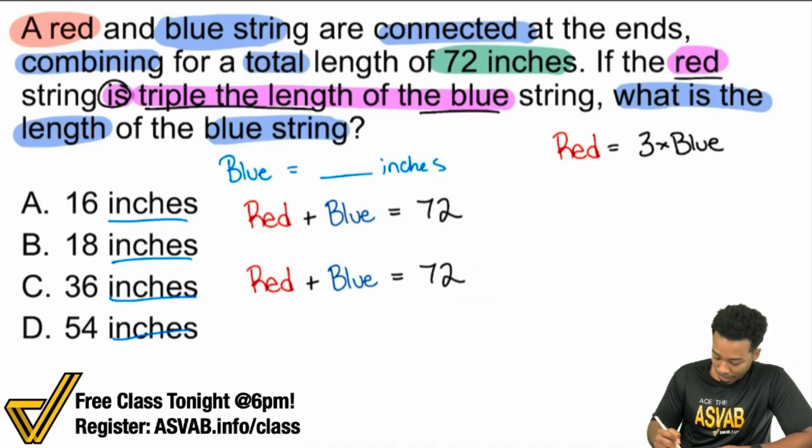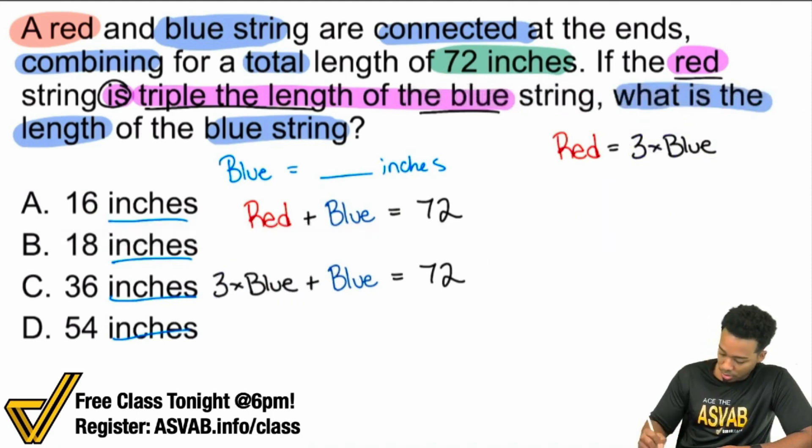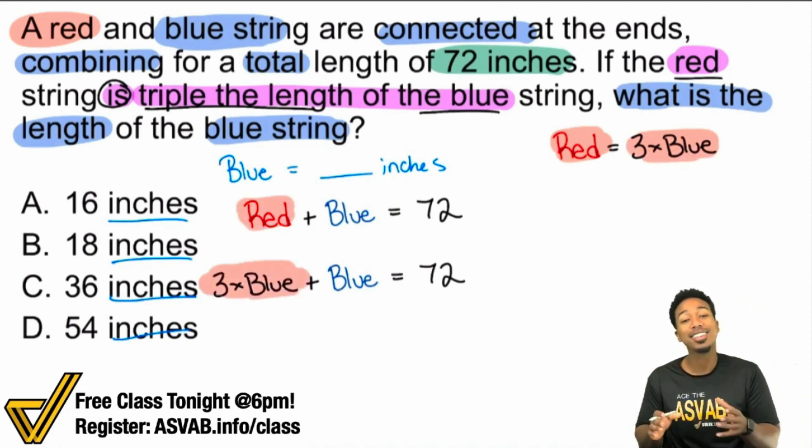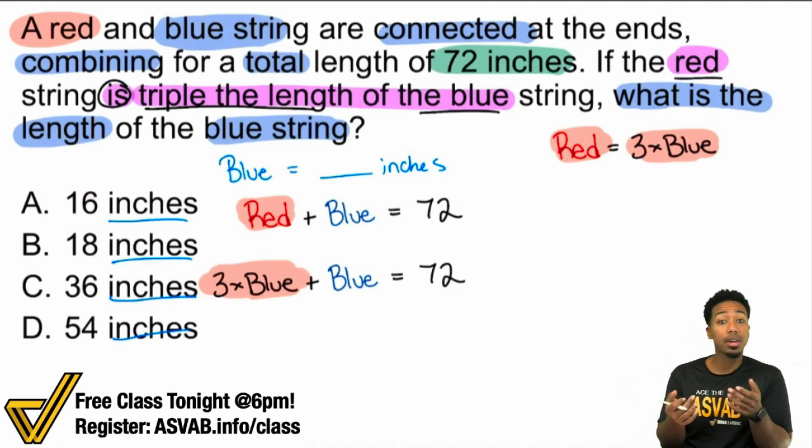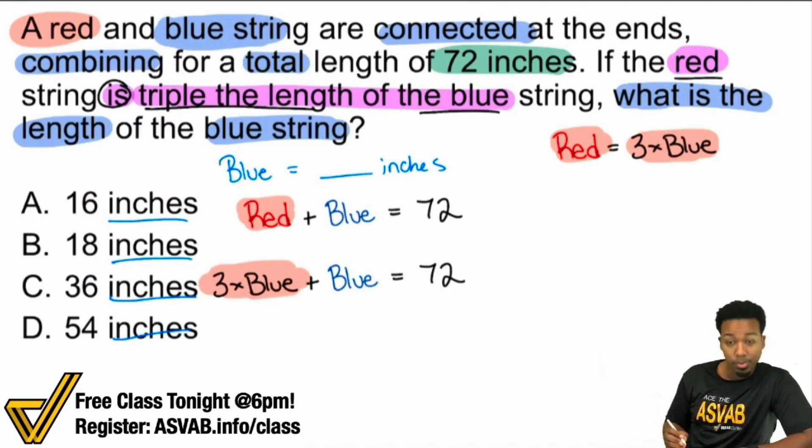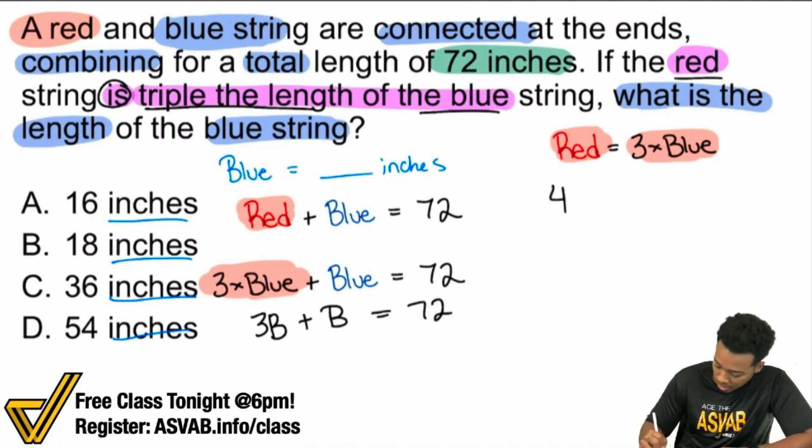So notice again, red, three times blue, red, three times blue. All I did was replace red with three times blue, what it's supposed to be. And if you wanted to write R and B instead of red and blue, totally fine. But here, watch, I got three times blue plus blue or 3B if you want to write it that way. 3B plus B. Well, all you have to do now is go ahead and add 3B and B to make 4B. Four blues together make 72.